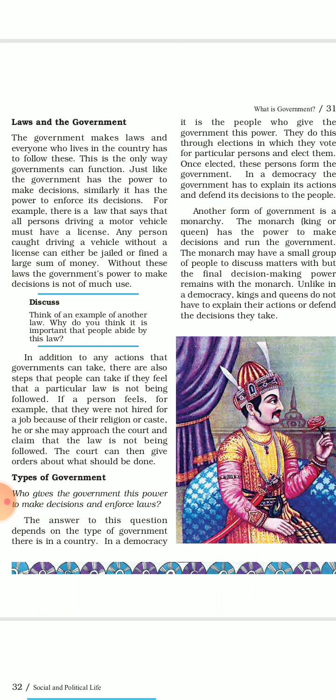The government needs law to maintain peace and order in society. Law establishes justice. It is meant to achieve constitutional ideas, that is equality and right against discrimination. Law makes it compulsory for the people to obey it. The government makes law and everyone who lives in the country has to follow it. This is the only way governments can function.